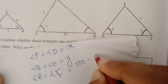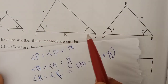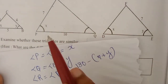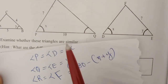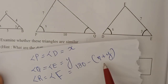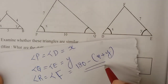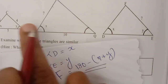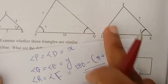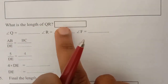Angle R and angle F are automatically equal. That is 180 minus (x plus y). If the sum of angles is 180, then x and y are on the same side, so 180 minus (x plus y) is the same. Therefore the 3 triangles are similar.